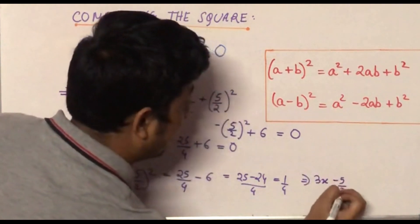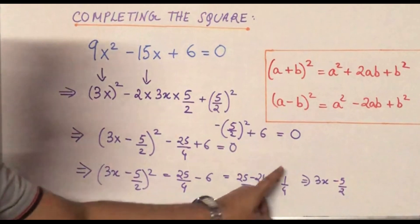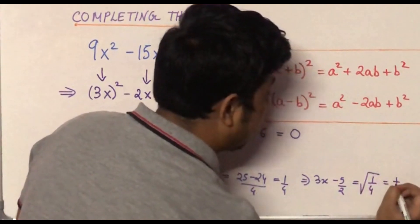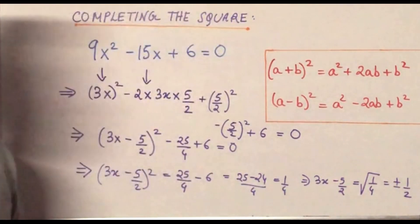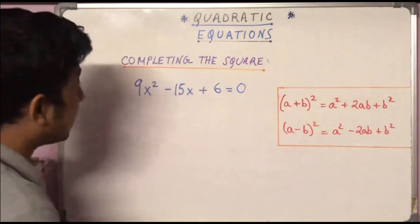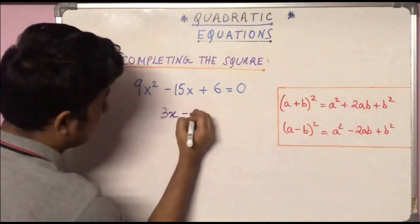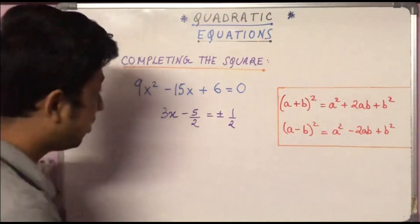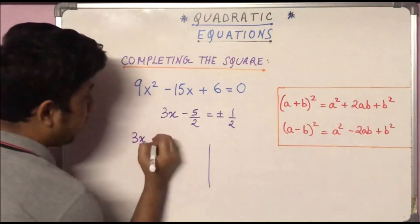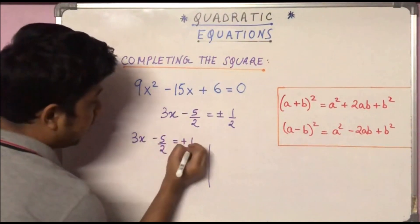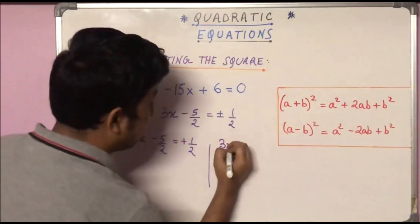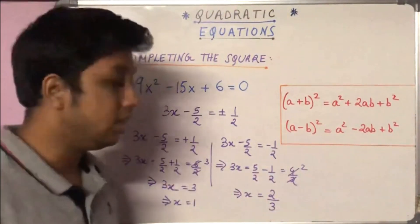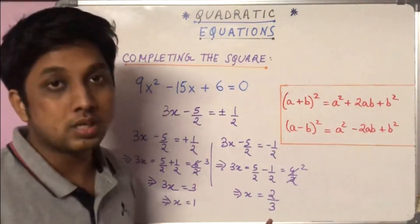So (3x - 5/2)² = 1/4. That means 3x - 5/2 = ±√(1/4) = ±1/2. Taking the positive sign and the negative sign separately, by simple calculation we get two roots: x = 1 and x = 2/3. These are the two roots of the equation.